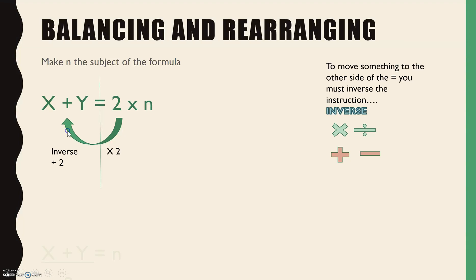So we then have this, and the final step isn't actually something you have to do, but just to make it easier to read. Sometimes you can flip it round and then you have n equals x plus y divided by 2, and you have made n the subject of the formula.